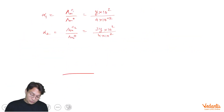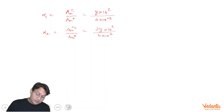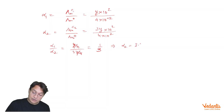Now, the approach is to create the ratio of alpha1 to alpha2. Alpha1 upon alpha2 is clearly equal to (y/4) upon (3y/4), which gives 1/3. This means that alpha2 is equal to thrice of alpha1. We got this relationship.